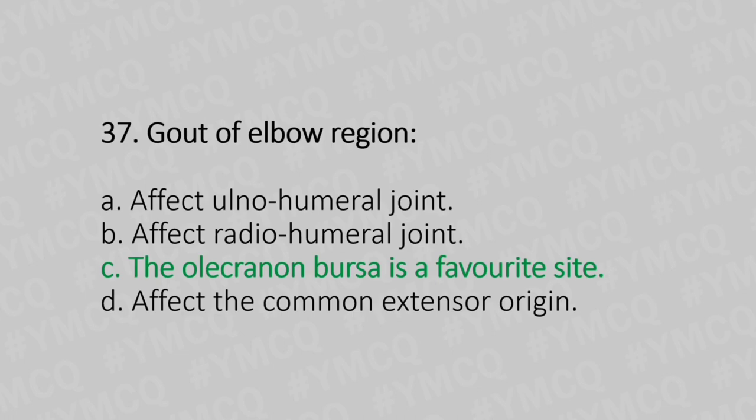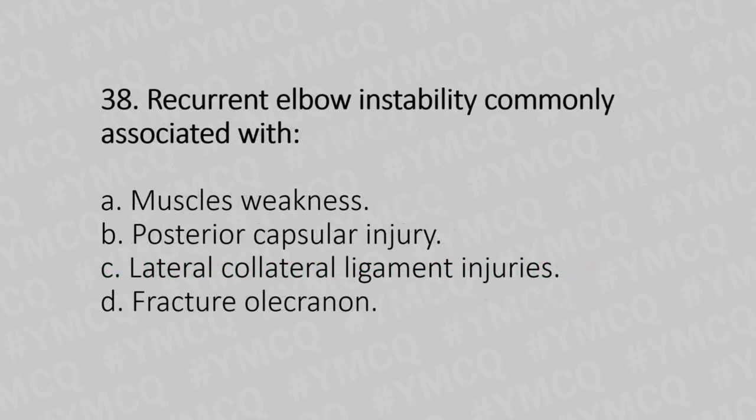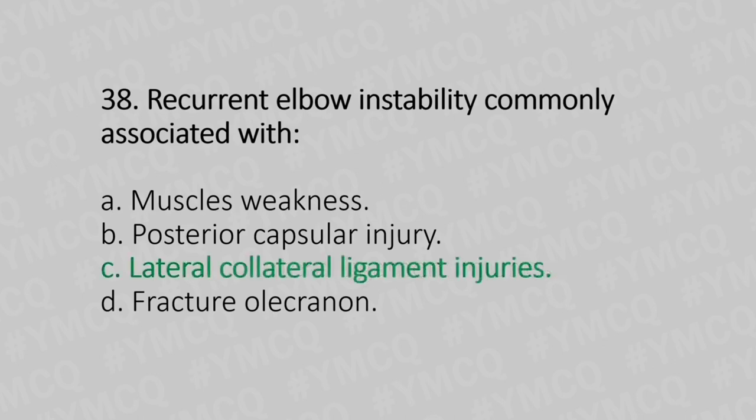Now let's move to question number 38. Recurrent elbow instability is commonly associated with. Option A: muscle weakness. Option B: posterior capsular injury. Option C: lateral collateral ligament injury. Option D: fracture of olecranon. And the answer is Option C, lateral collateral ligament injury.